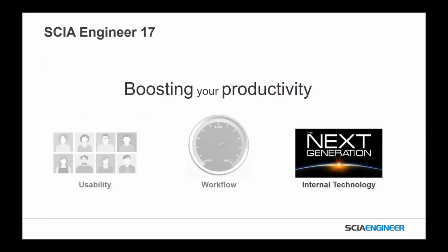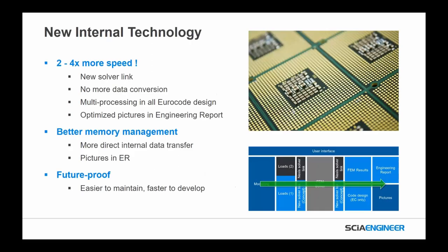Let's dive a little bit more into this internal technology. Through things like the new solver link, getting rid of data conversion, multi-processing in Eurocode design, and optimization of items into the engineering report like pictures, we were able to increase speed. Through different testing, we found 2 to 4 times faster performance in the software.